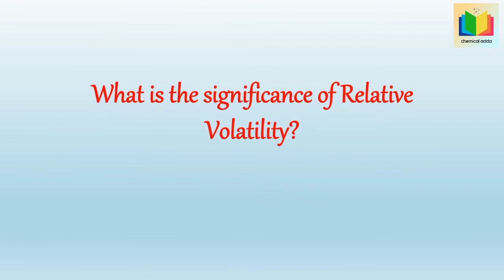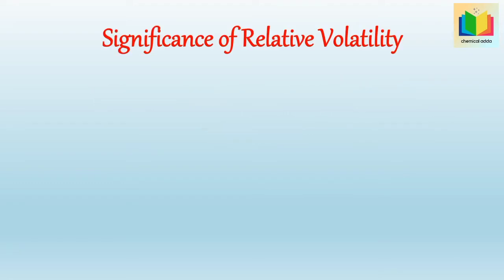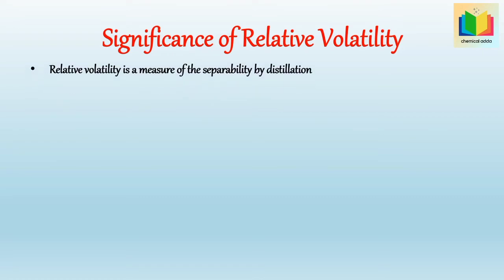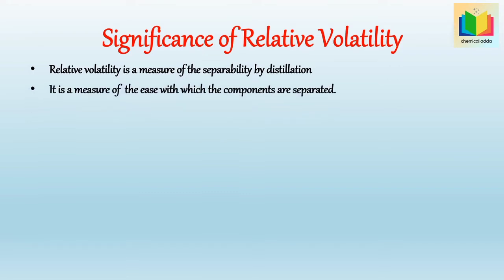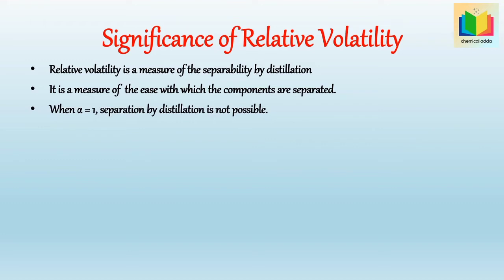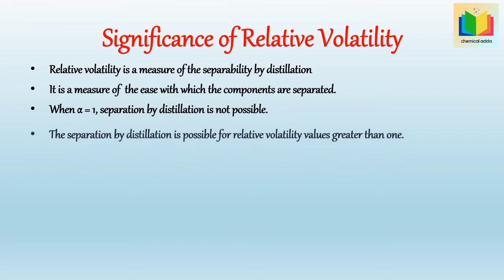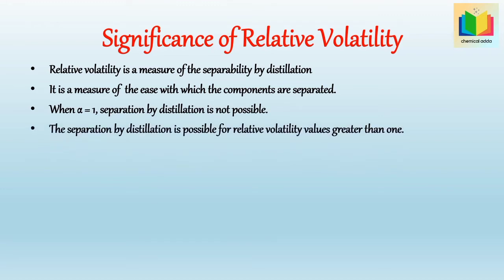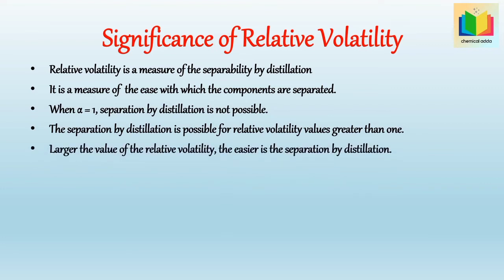What is the significance of relative volatility? Relative volatility is a measure of the separability by distillation — it is a measure of the ease with which the components are separated. When α = 1, separation by distillation is not possible. Separation by distillation is possible for relative volatility values greater than one. The larger the value of the relative volatility, the easier is the separation by distillation.